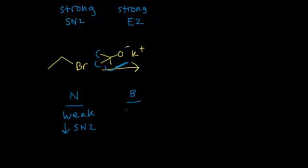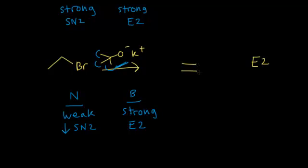If we think about the basicity of our alkoxide anion, we know that it is a strong base. Strong bases would favor an elimination reaction — an E2 reaction, a concerted mechanism. We have decreased likelihood of SN2 because it's a sterically hindered, weak nucleophile. But it's a strong base, so this is going to react via an E2 mechanism. We're going to form our alkene — take a proton, the bromine leaves, and we form our alkene.